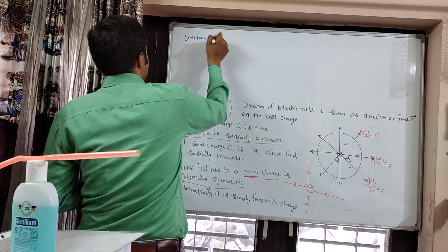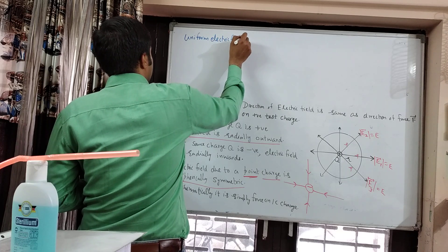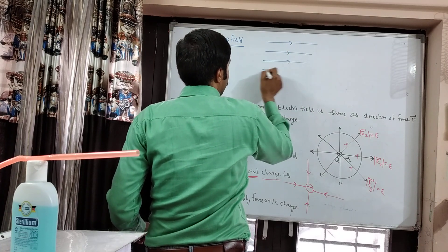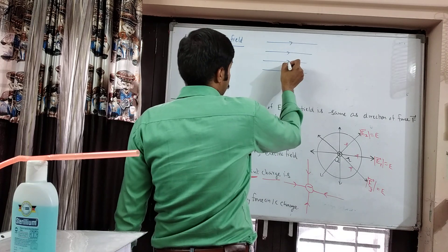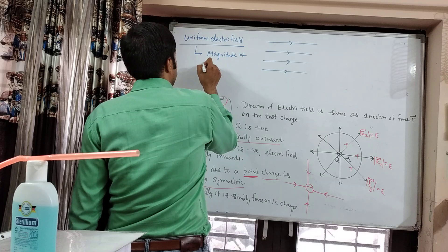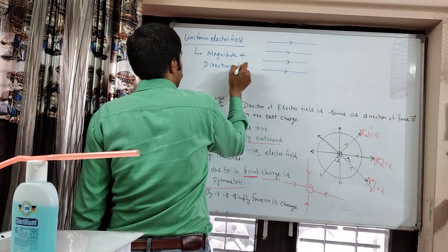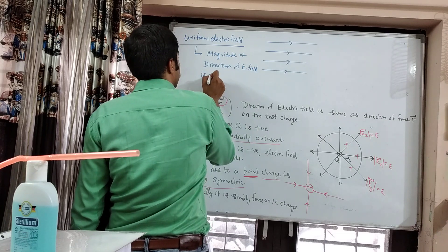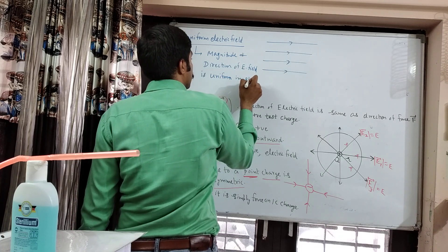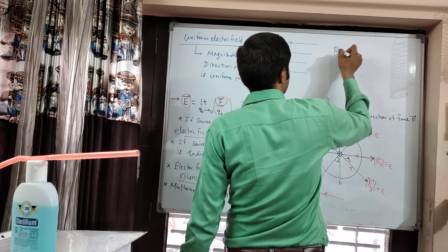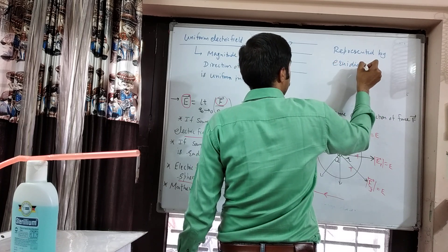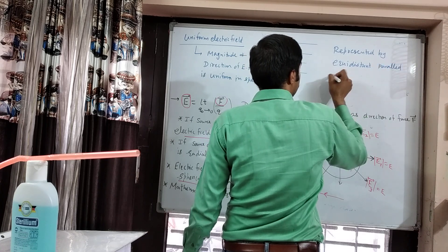A uniform electric field is an electric field whose magnitude and direction are the same everywhere. It is represented by equidistant parallel straight lines with arrows in the direction of the electric field. Uniform electric field means magnitude and direction of the electric field are uniform throughout space.